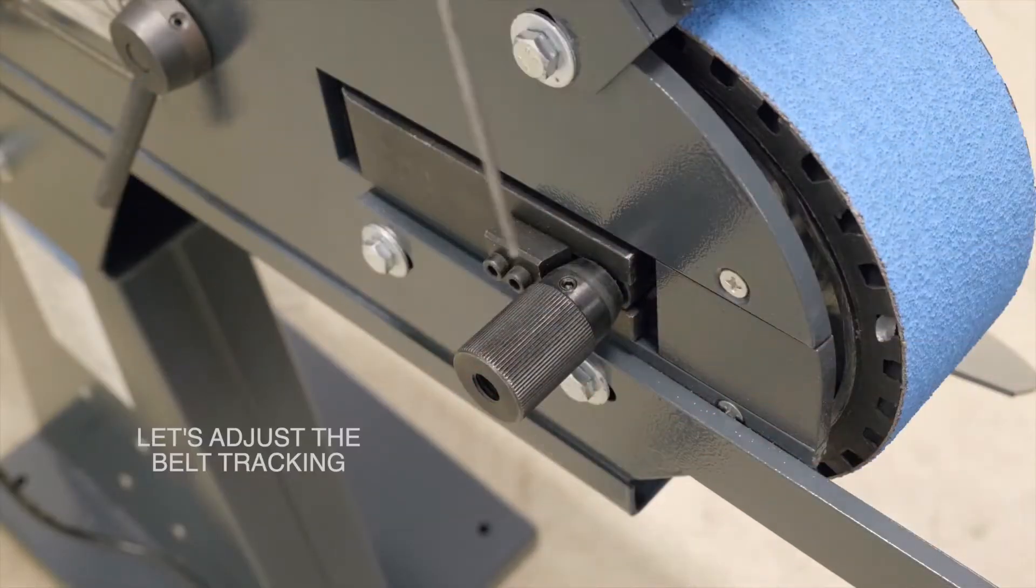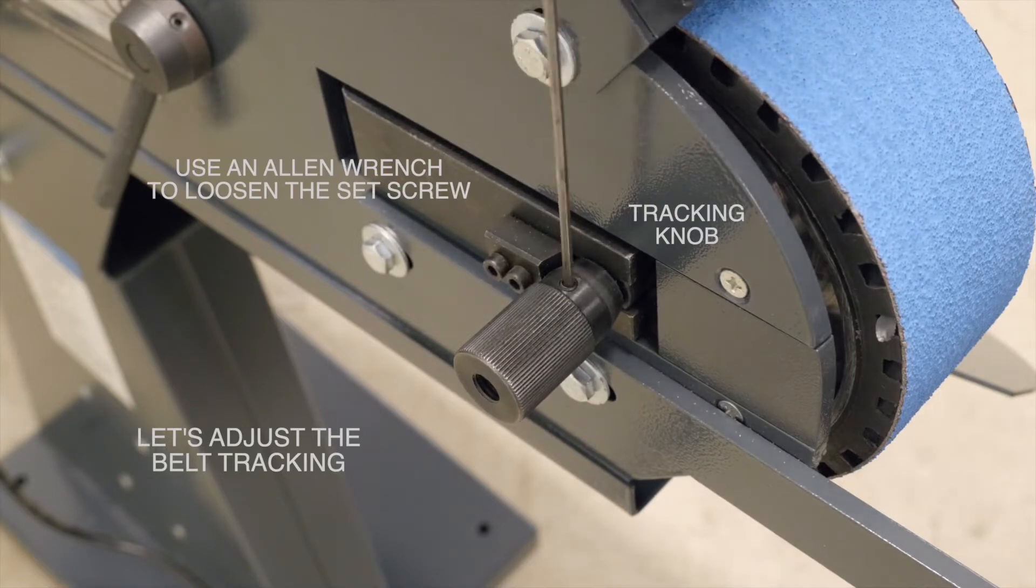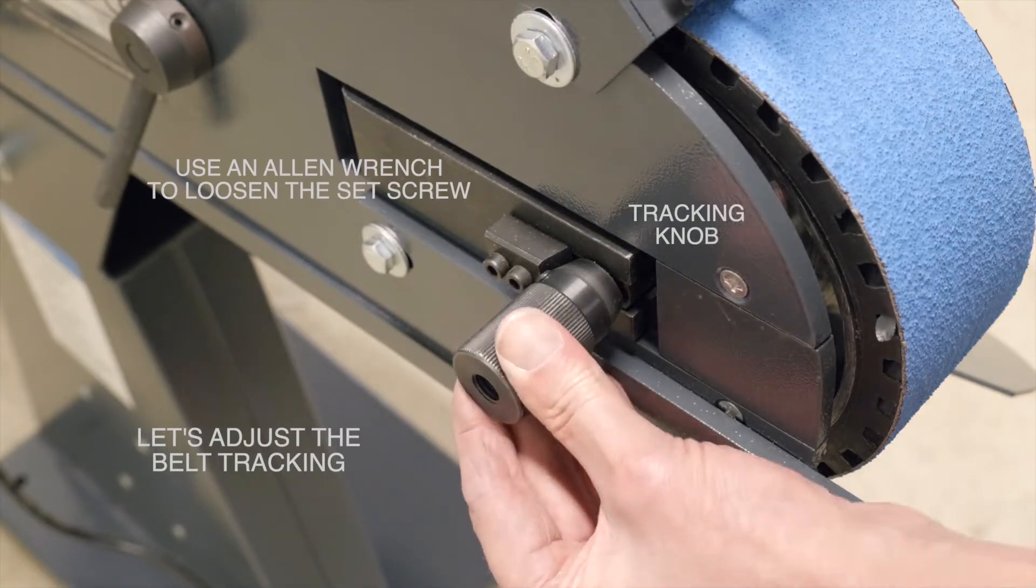Now we can adjust the belt tracking by using an Allen wrench, and we're going to loosen the set screw on the tracking knob.